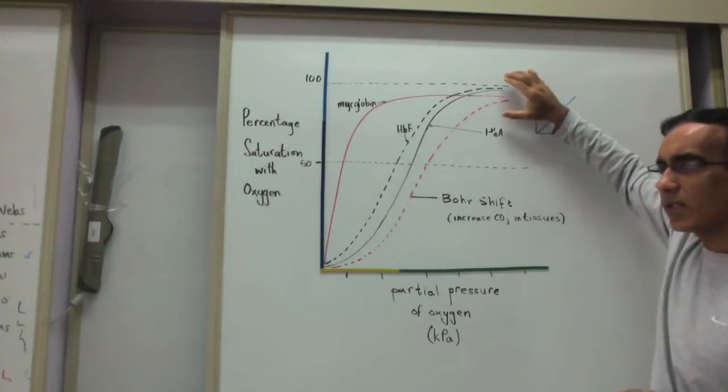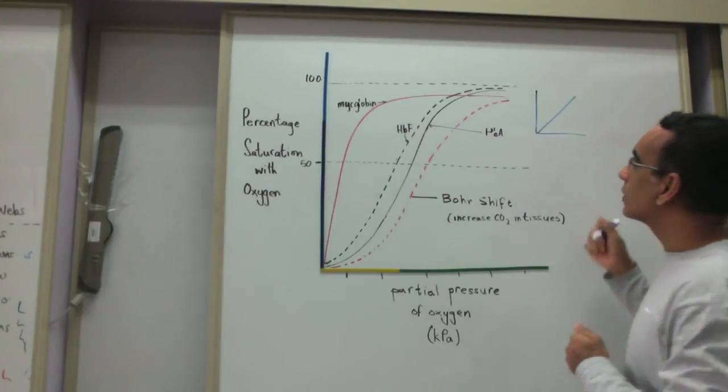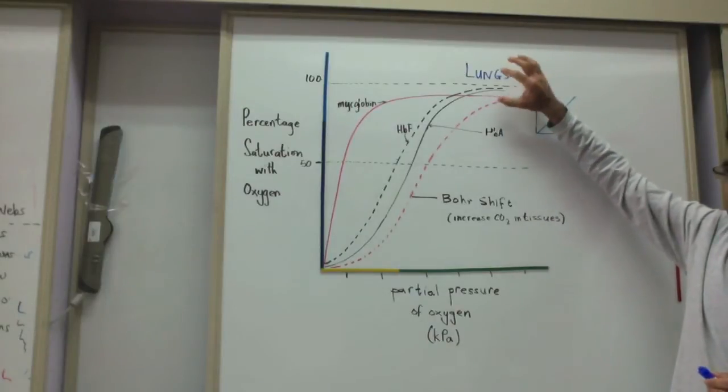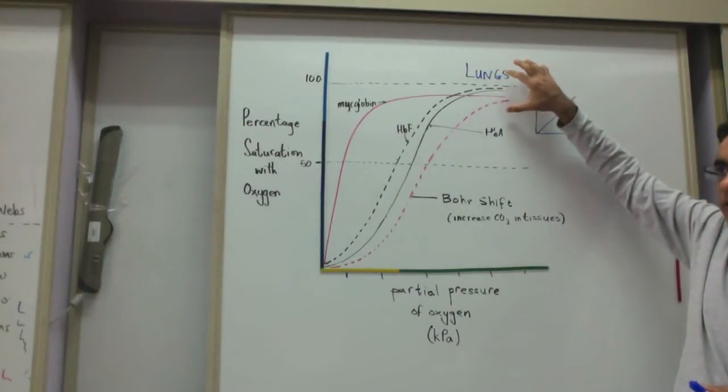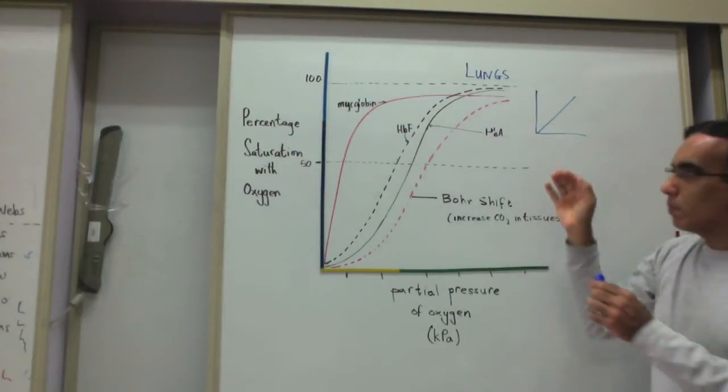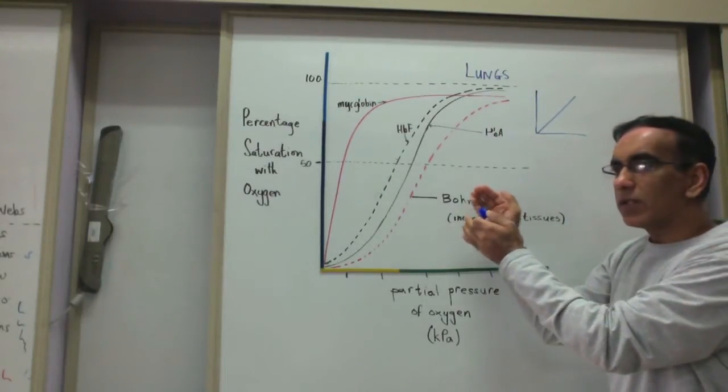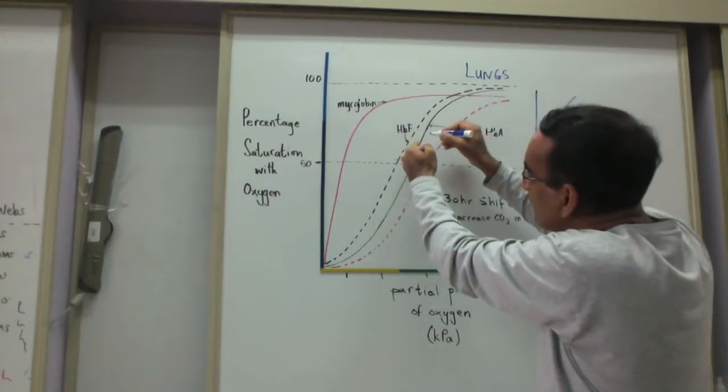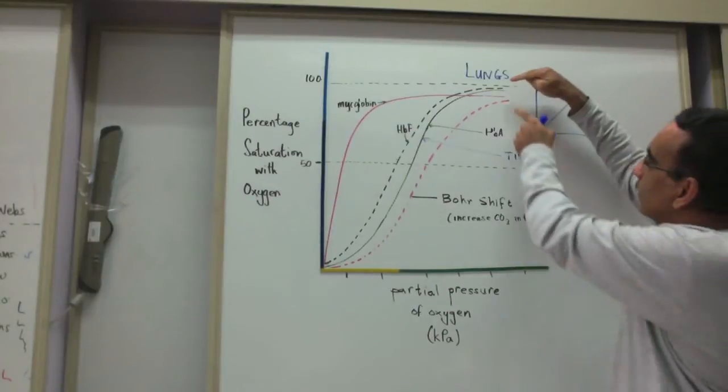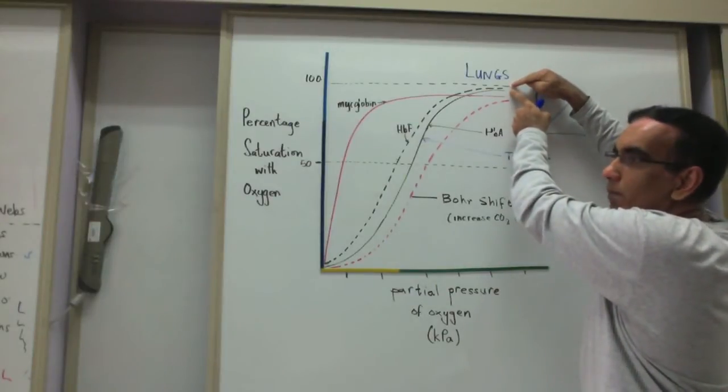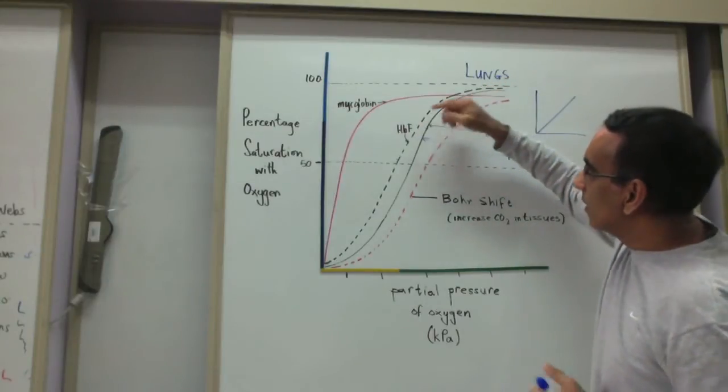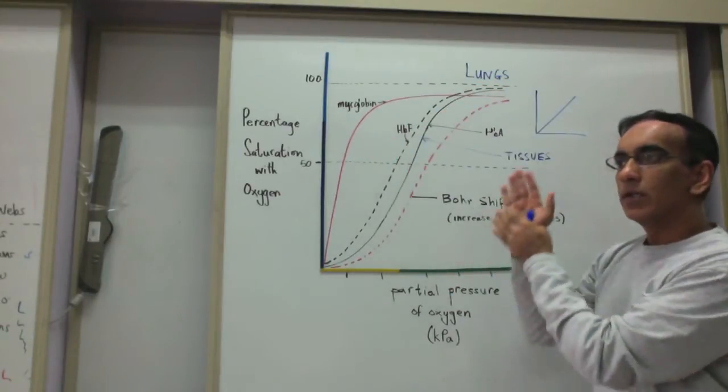It is this 100% saturation that occurs in the lungs. Hemoglobin goes to the lungs, gets 100% saturated with oxygen. And then as it leaves the lungs and goes to the tissues, it releases some of that oxygen. In the tissues of a resting human being, hemoglobin would become 100% saturated in the lungs and then deposit some of that oxygen to the tissues.